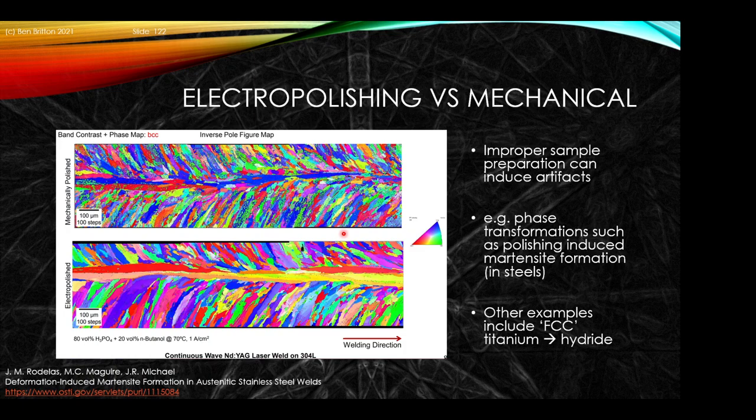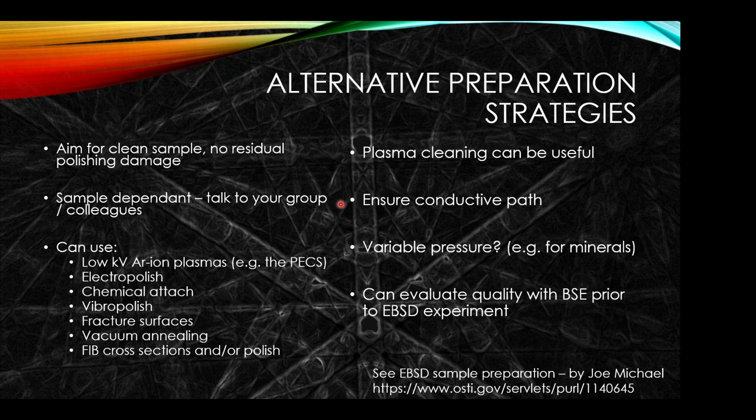Improper sample preparation can induce artifacts. This can produce things like sample polishing-induced martensite formation. You could get the introduction of hydrides that may look FCC-like in a titanium microstructure. You could also find that some phases are preferentially ripped out or pulled out of the material — you haven't retained a precipitate — or that one phase is preferentially polishing faster than another.